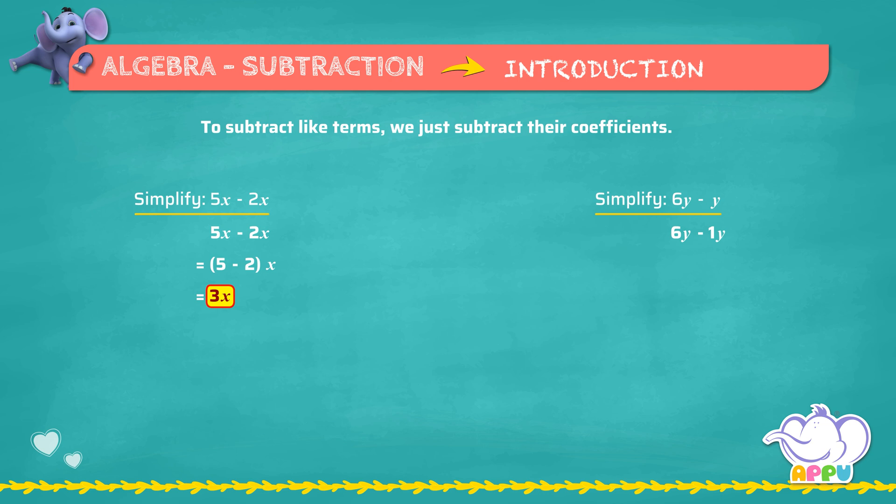Which we subtract: 6y minus y equals (6 minus 1)y equals 5y. Consider the expression 4x minus 2y.